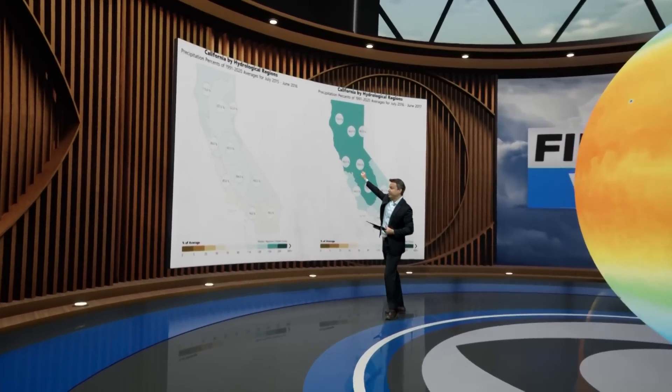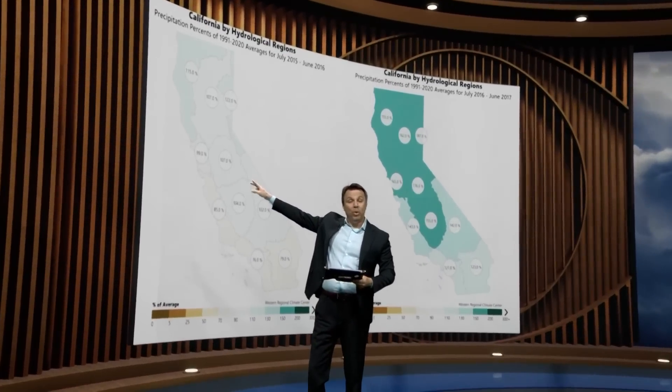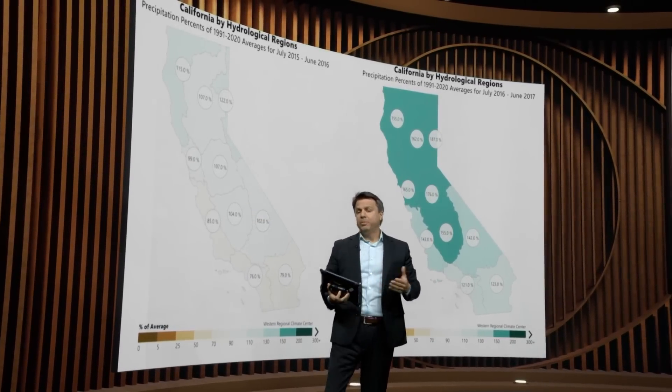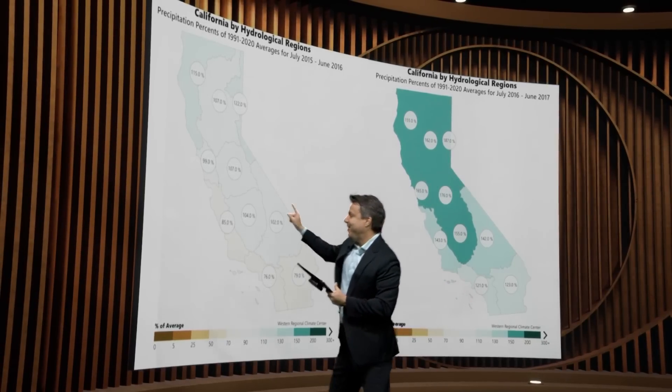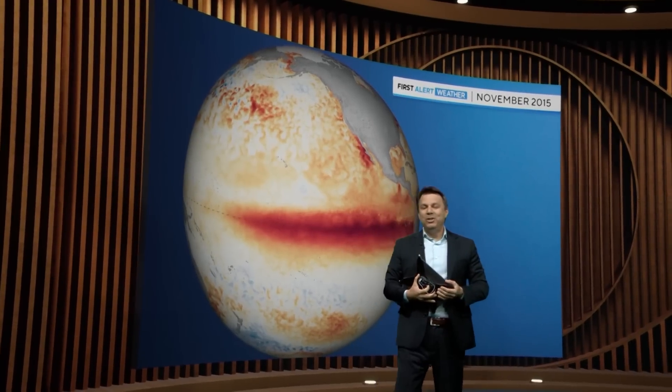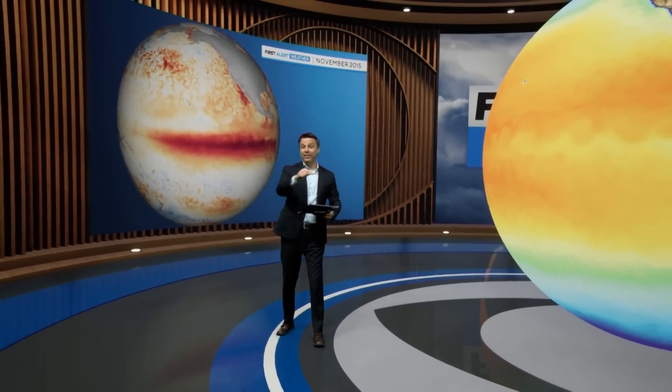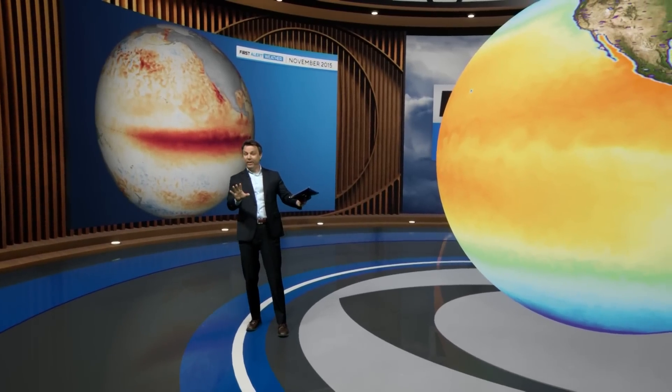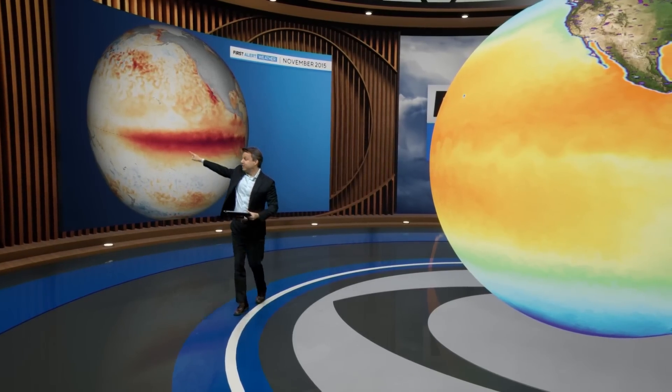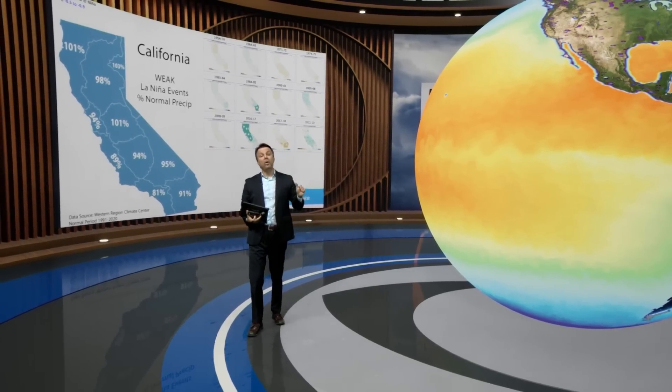The winter before that, 2015-2016, we got about an average amount of rain and snow across California — an uneventful winter. And leading into that winter, you remember the term 'Godzilla El Niño'? That was one of the strongest El Niños on record, about three degrees warmer than average, and everyone was bracing for a super intense winter. It turned out to be a mild, very manageable average year. So the takeaway on El Niño and La Niña is they are helpful tools, but by no means a guarantee.